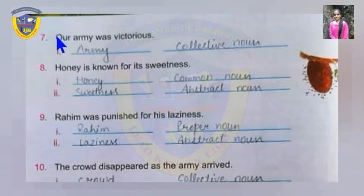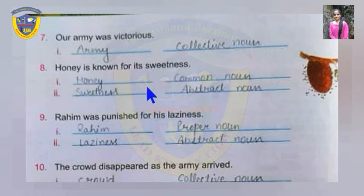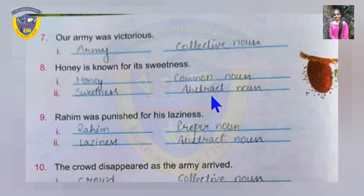Seventh sentence: our army was victorious. Here, army is a name used for a group of people, so it's a collective noun. In the eighth sentence: honey is known for its sweetness. Honey and sweetness are both nouns. Honey is a common noun — not a specific noun. Sweetness is an abstract noun because it's something we can't touch, can't see, but we can feel.